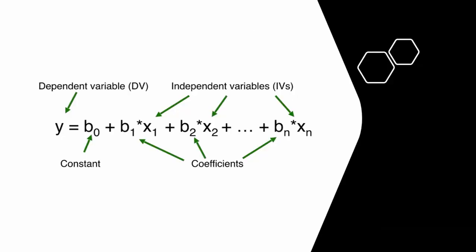Here is an example for dependent and independent variables. Y is the dependent variable, and x1, x2, through xN are the independent variables.